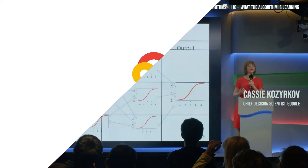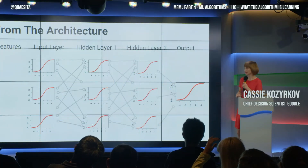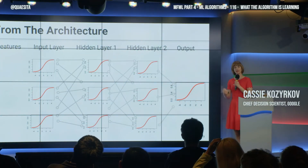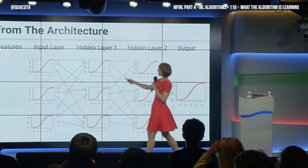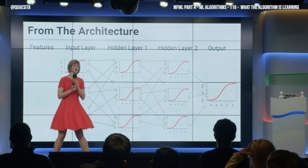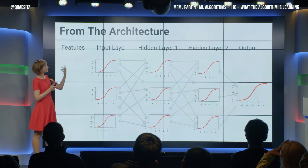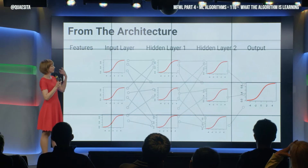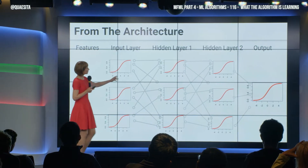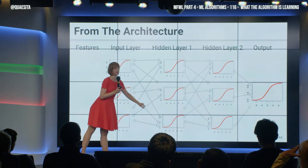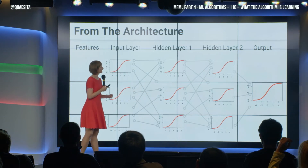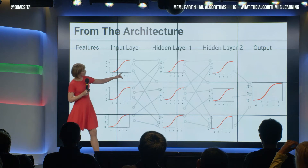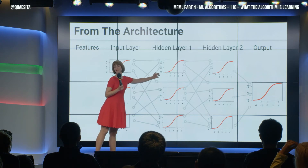Now, what is there before we begin with this method? From the architecture, the settings that you set up — you set up how many layers are we going to use. Is it one, two, three, a thousand, whatever. You also choose how many units are in each layer, and it doesn't have to be the same number of units in each one. And you are going to choose the activation function that you'll use.